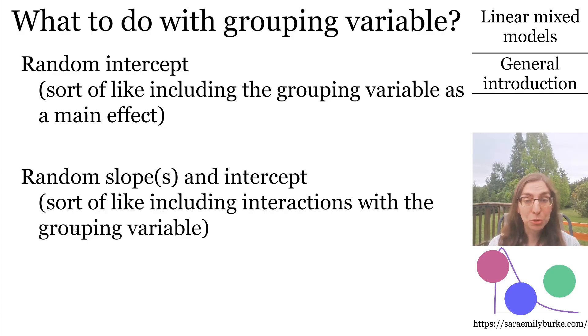The second option, random slopes and intercept, allows the slopes to vary by group, too. This is typically framed as each group having its own intercept and its own slope for the regression line, which is why it's like having an interaction with conditional slopes for each group. But in this model, the intercept and slopes are treated as the result of a random process.